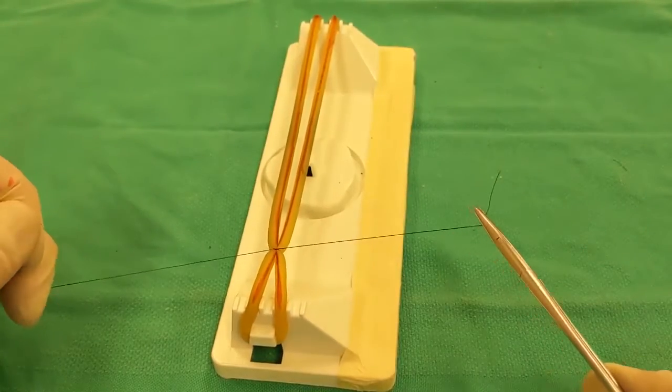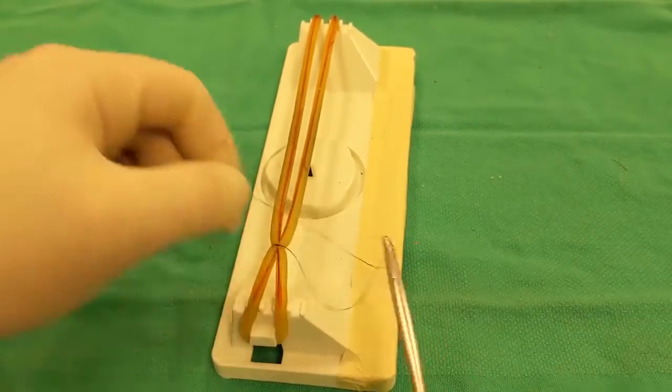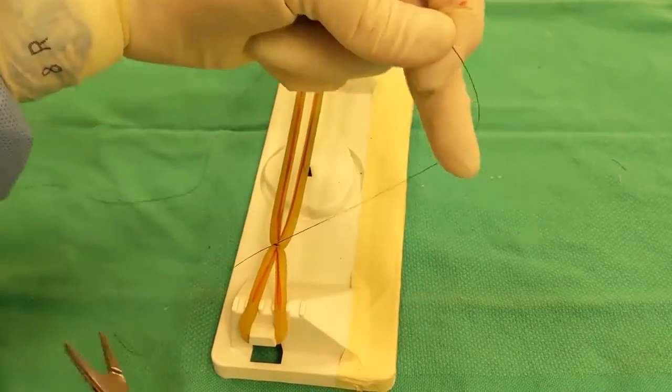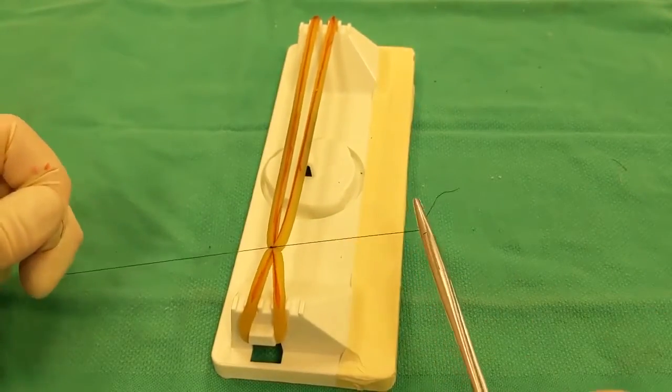You'd like for all the strands to be tidy and parallel. As always, a second square throw locks your first throw, and then you'll place another knot on top to lock your ligature in place.